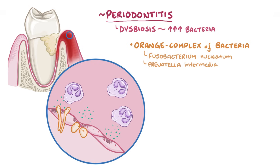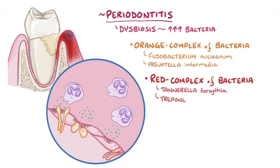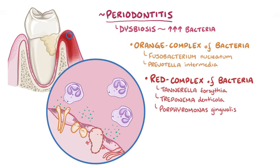Once these orange complex bacteria are established, the next step is the presence of the so-called red complex of bacteria, which includes Tannerella forsythia, Treponema denticola, and its most notorious member, Porphyromonas gingivalis, or P. gingivalis for short. Another line of thinking suggests that rather than these red complex bacteria being the specific culprits, it's the overall change in the bacterial community that these bacteria trigger that tips the scale toward periodontitis.